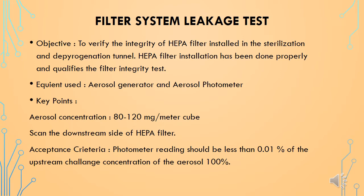To perform this test, place the aerosol generator to introduce an aerosol challenge to the filter in a zone-wise manner at a concentration of 80 to 120 mg per m³ of air, by opening the appropriate number of nozzles. Then with the aerosol photometer, check for leakages by scanning the downstream side of the HEPA filter, its perimeter, the seal between the filter frame and grid, and the structure including its joints.